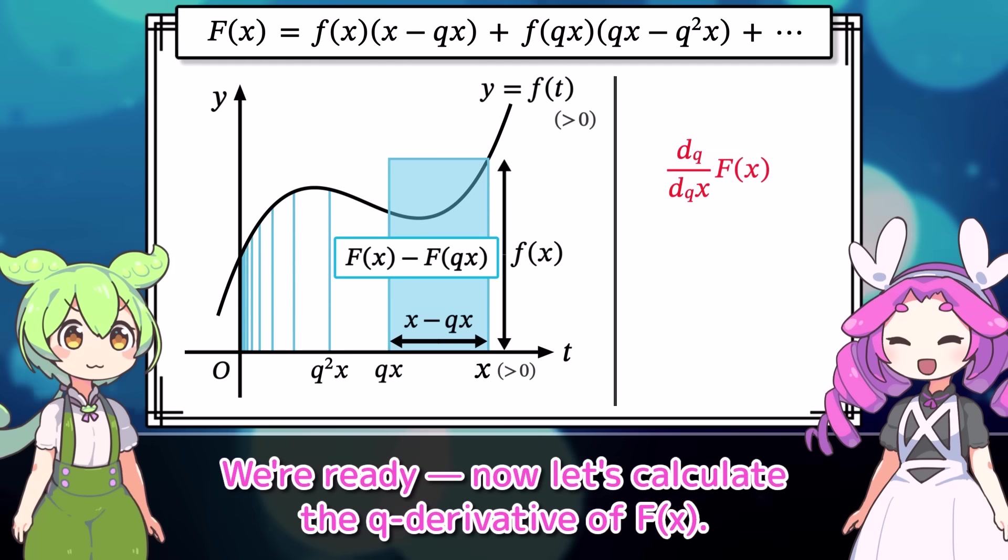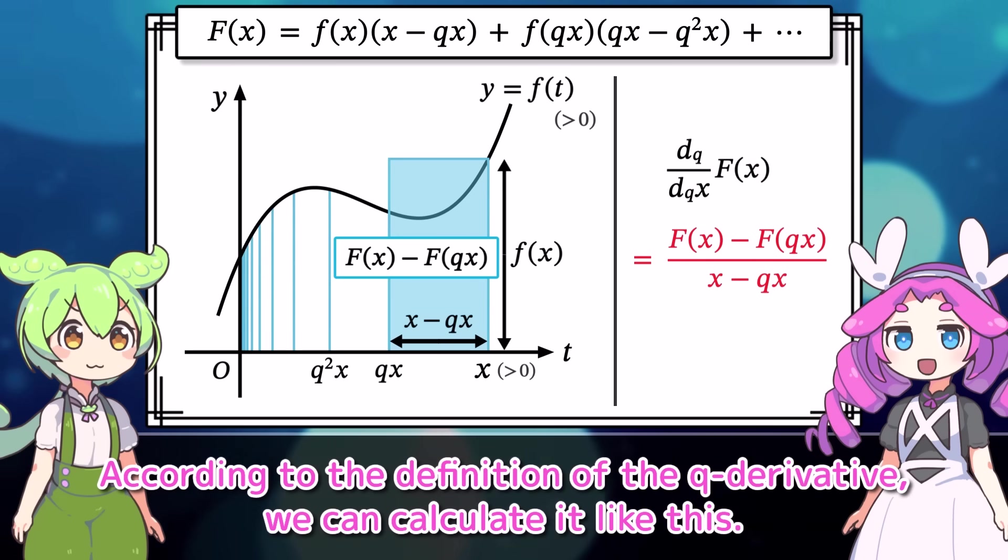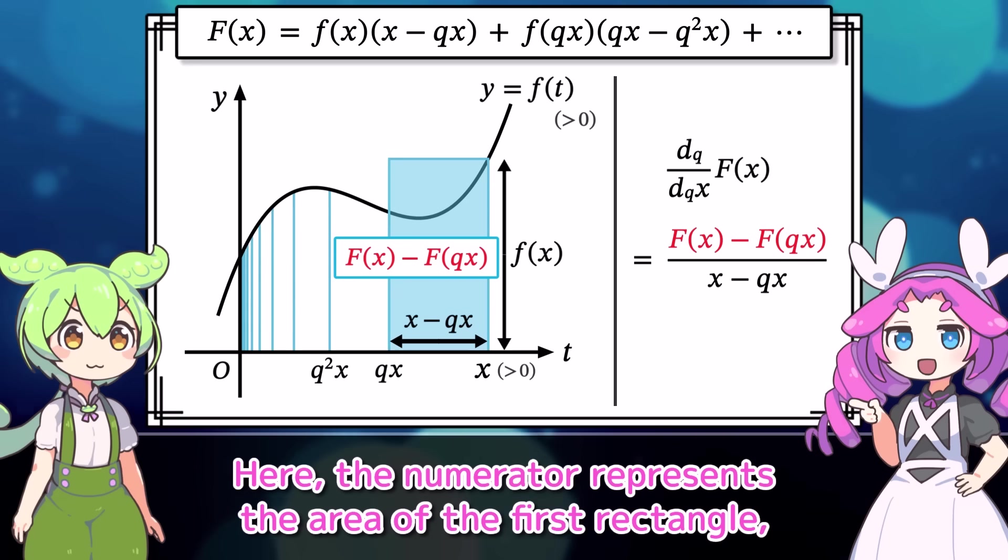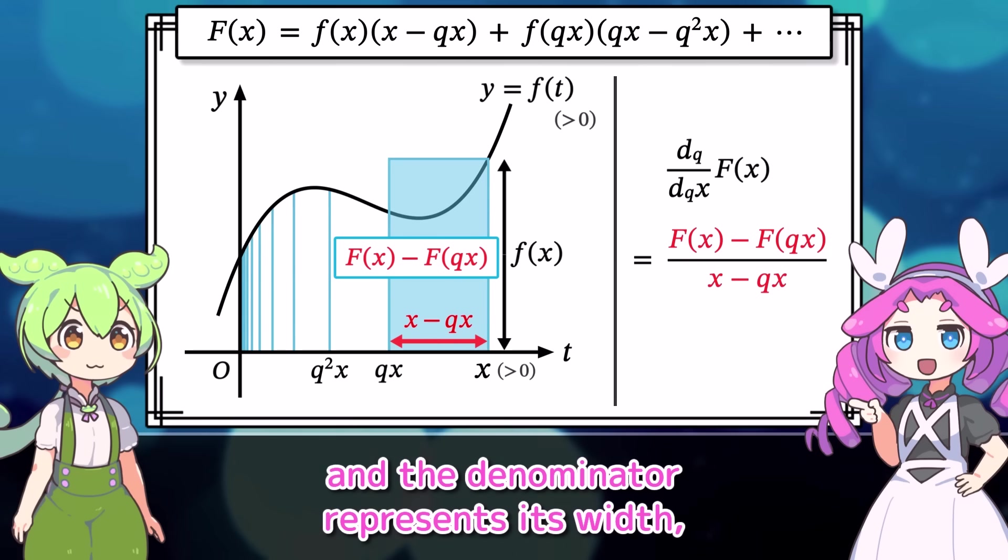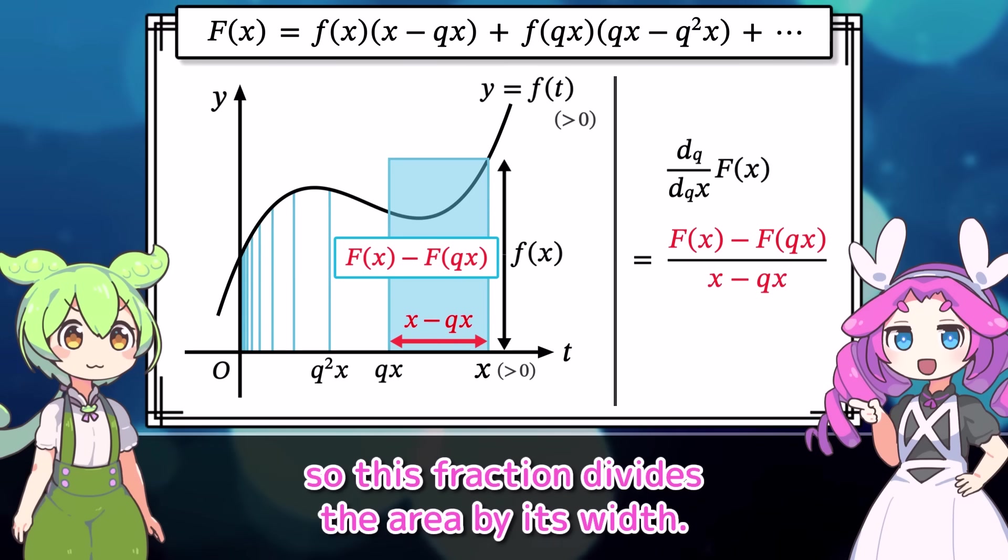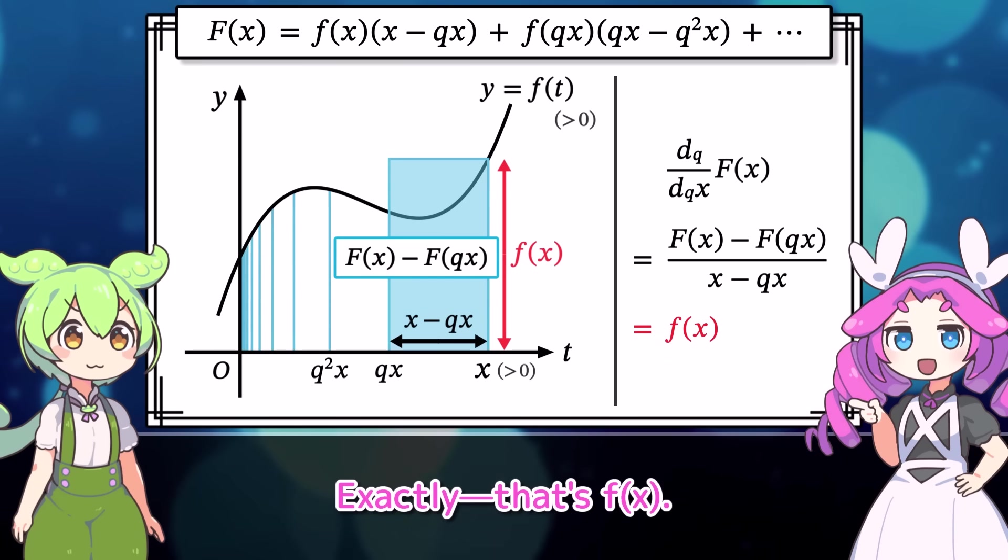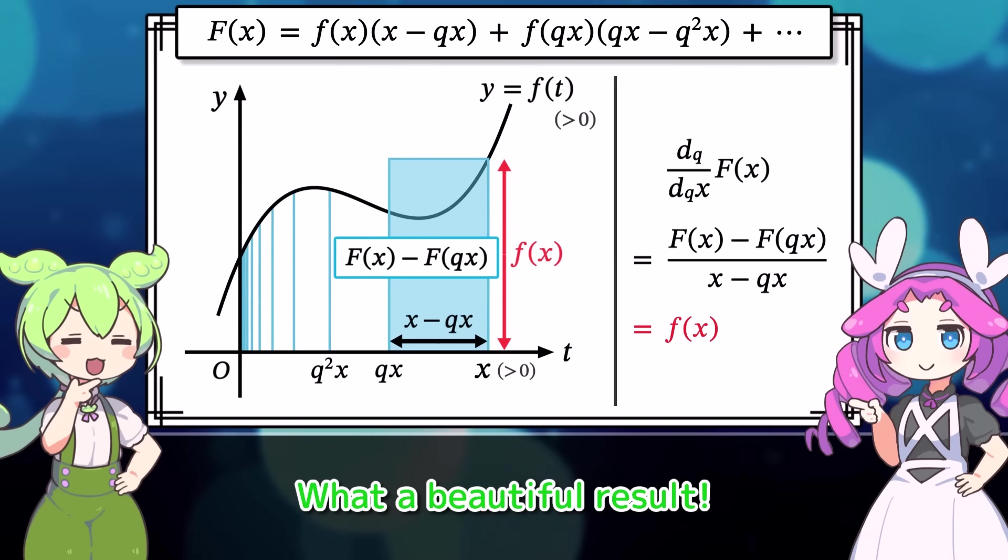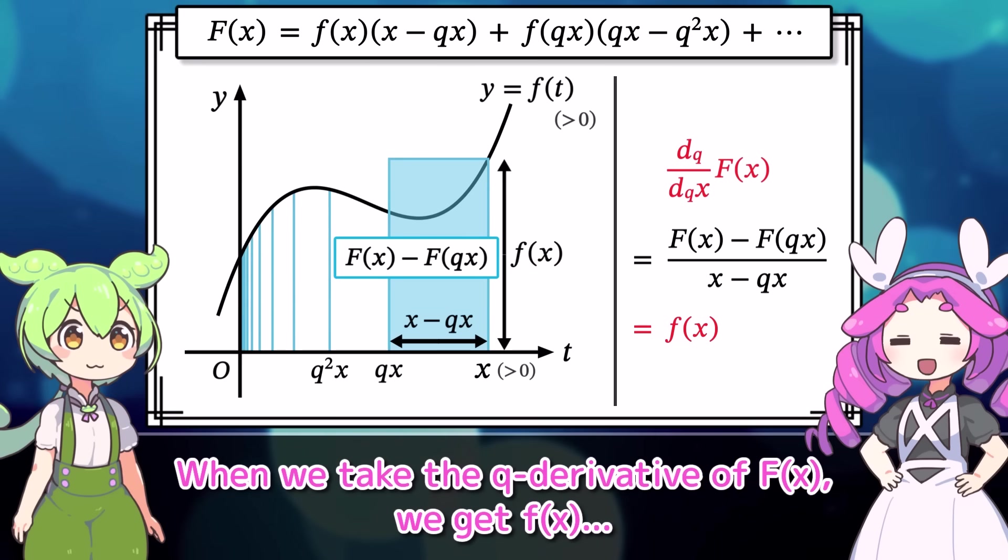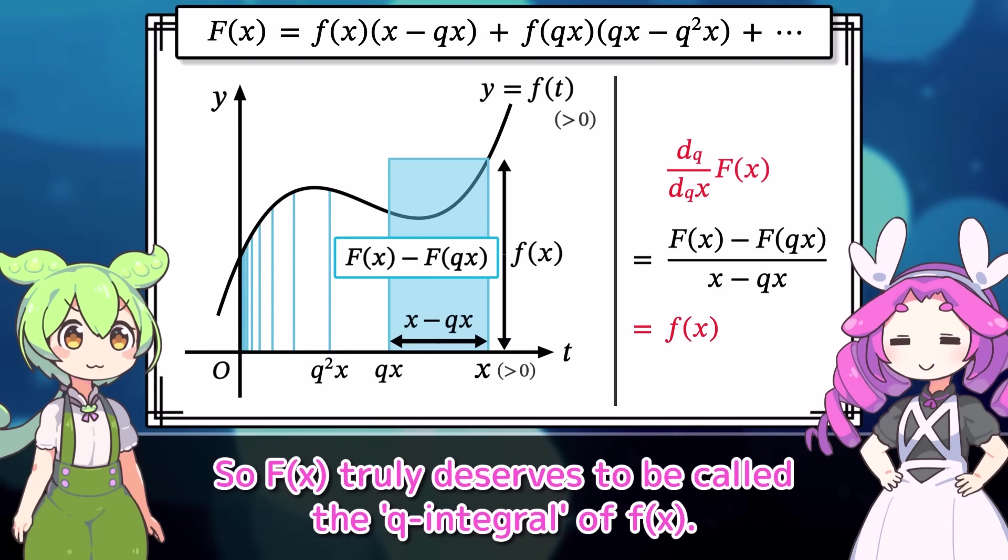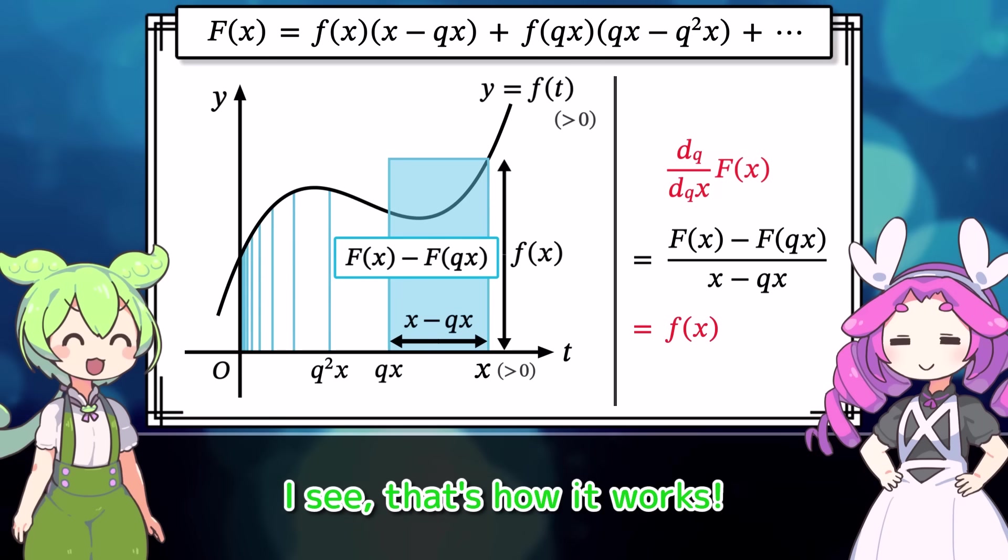We're ready. Now let's calculate the q derivative of capital F of x. According to the definition of the q derivative, we can calculate it like this. Here, the numerator represents the area of the first rectangle, and the denominator represents its width. So, this fraction divides the area by its width. That gives us the height. Exactly, that's f of x. What a beautiful result! When we take the q derivative of capital F of x, we get f of x. So capital F of x truly deserves to be called the q integral of f of x. I see. That's how it works.